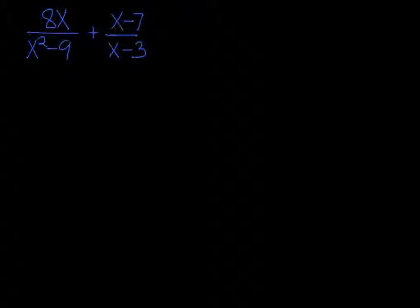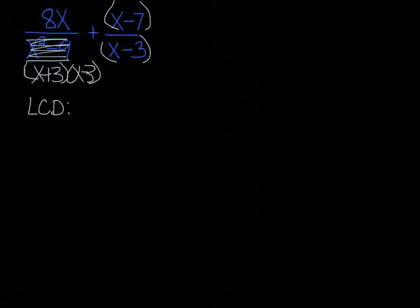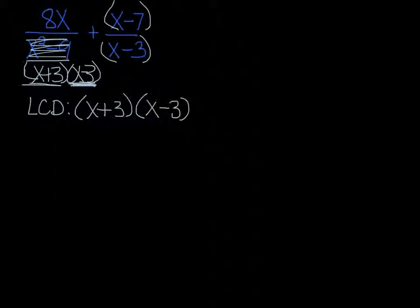Alright, new problem: 8x over x squared minus 9, plus x minus 7 over x minus 3. The very first thing you have to do is factor — x squared minus 9 factors to (x plus 3)(x minus 3). We always want to factor everything we can first. So now we have 8x over (x plus 3)(x minus 3) plus (x minus 7) over (x minus 3). Now we're looking for a lowest common denominator. In the first denominator I have x plus 3 and x minus 3, so I need both of those. In the second denominator I have x minus 3, and that's already taken care of. So my lowest common denominator is (x plus 3)(x minus 3).